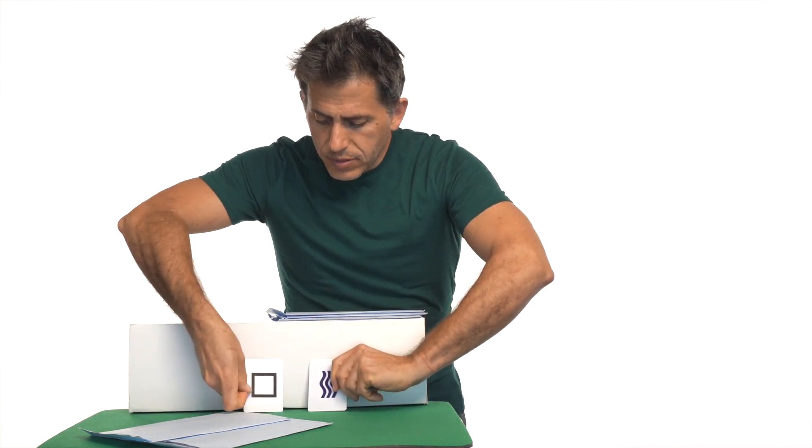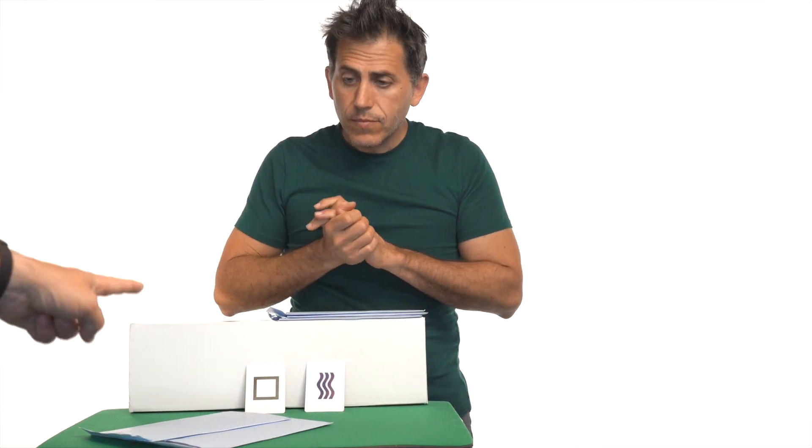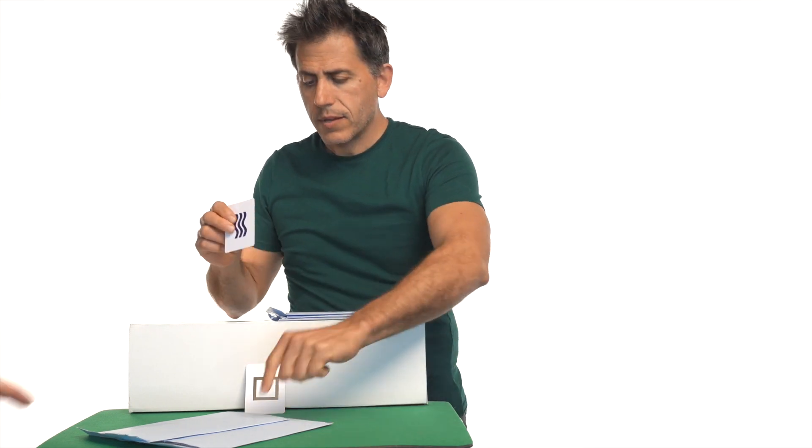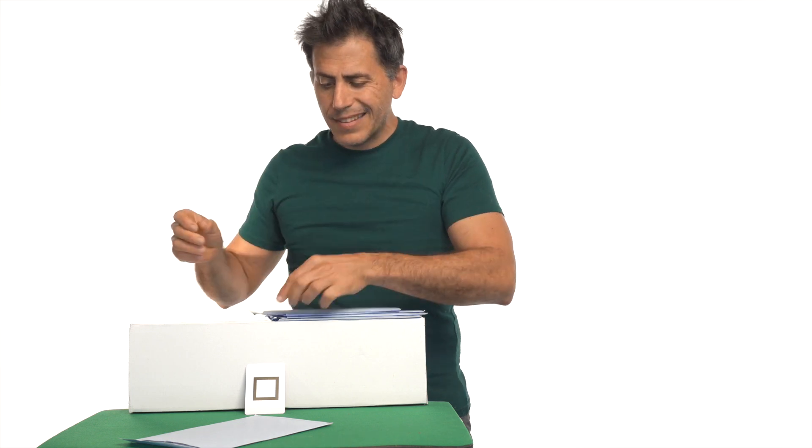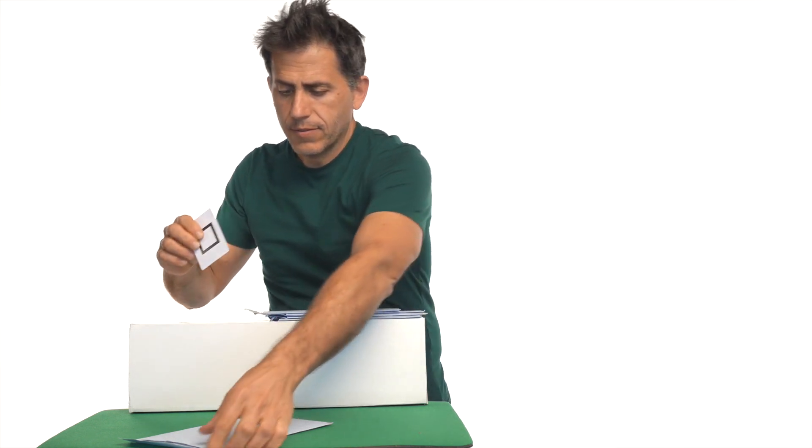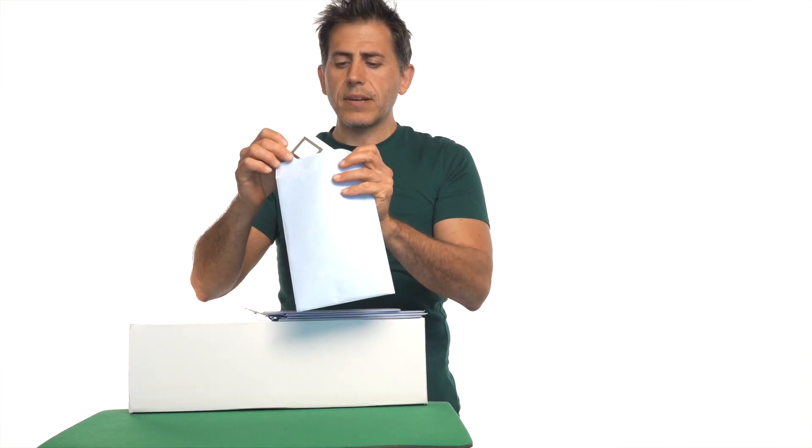Two symbols and two envelopes left. Wavy lines in that envelope. Okay. Okay, obviously we have the square left, which will go in the last envelope.